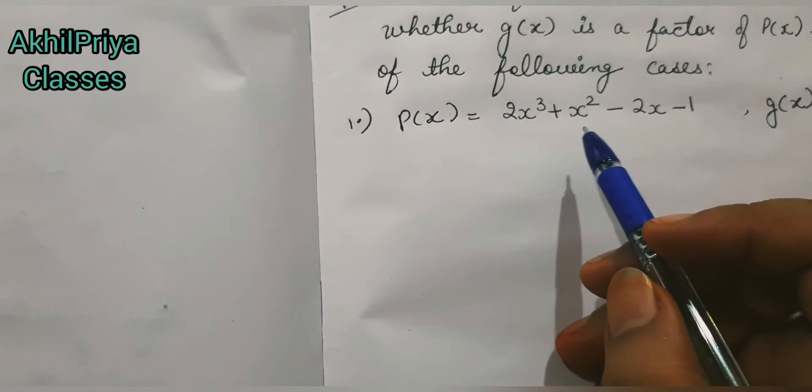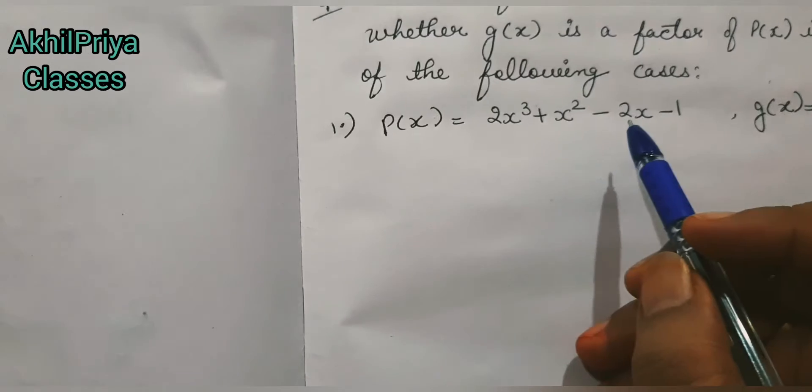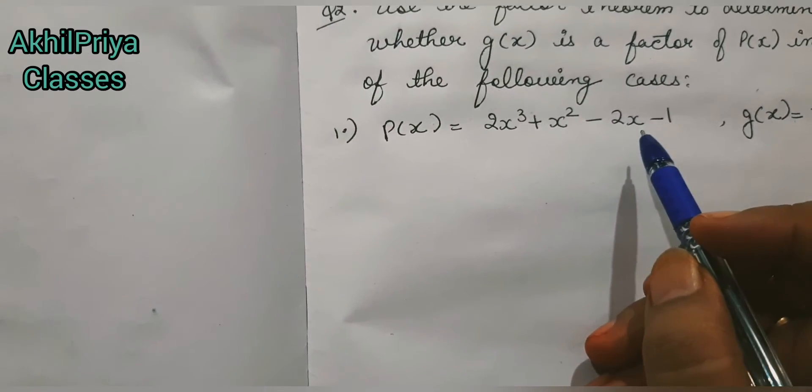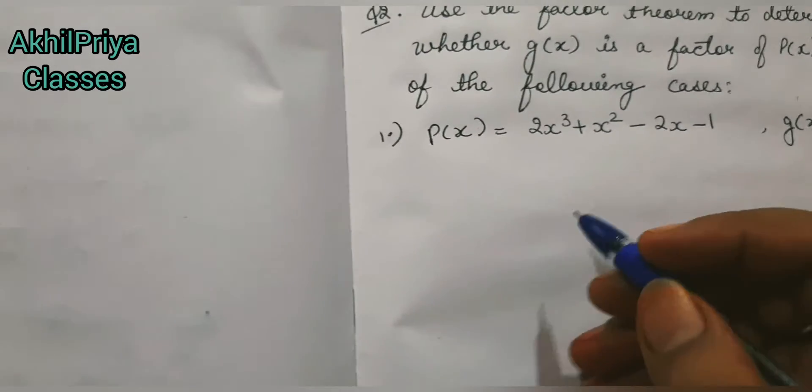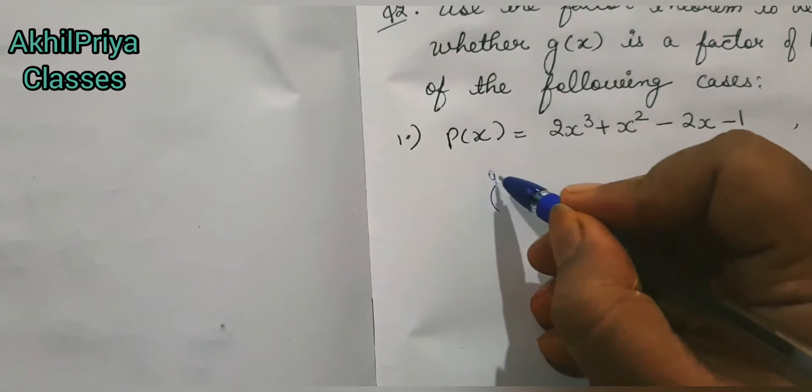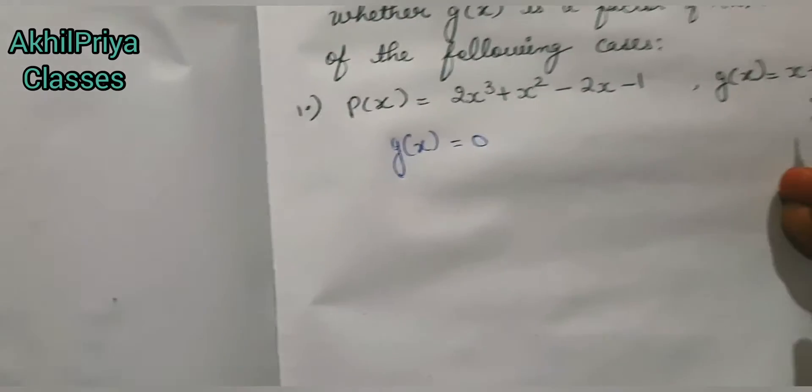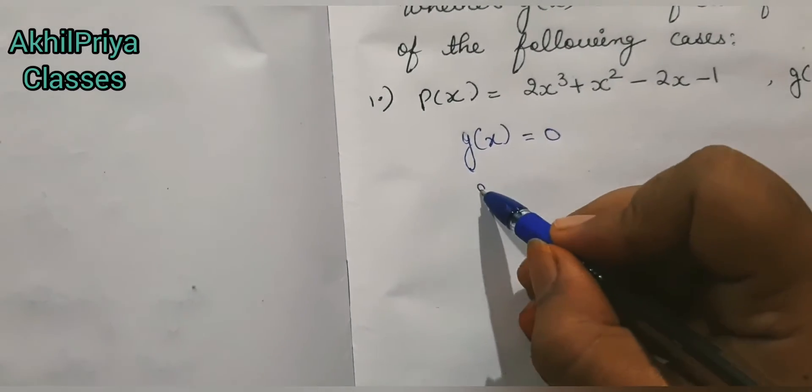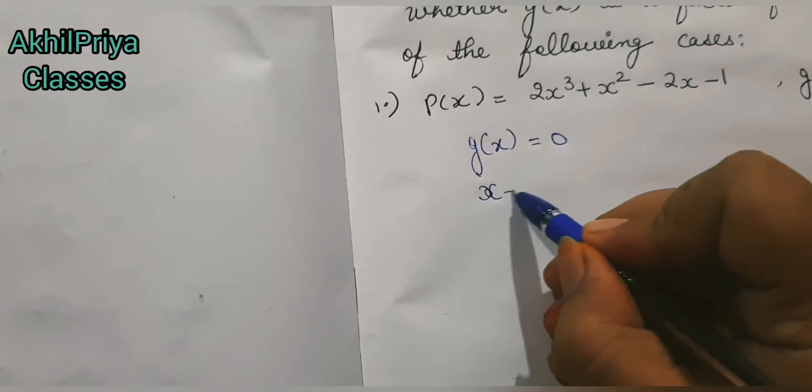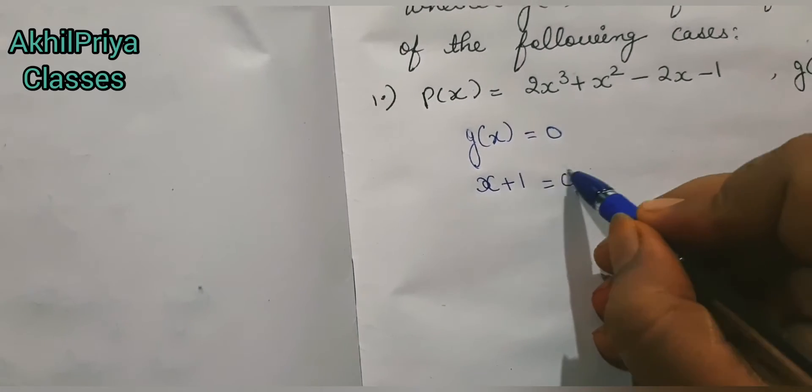As we have the polynomial p(x) = 2x³ + x² - 2x - 1. So first we need to put g(x) equal to zero. We have g(x) given in the question as x + 1.